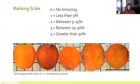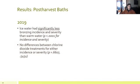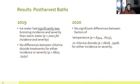Diving into the results of this first experiment and looking just at the post-harvest bath treatments: in 2019, the ice water had significantly less bronzing incidence and severity than the warm water baths. We didn't see any differences between warm or cold water baths with or without chlorine dioxide for either incidence or severity. In 2020, we didn't see any significant differences between any of the post-harvest bath factors — whether temperature or chlorine dioxide — for either incidence or severity.